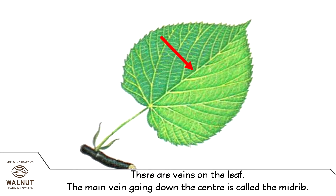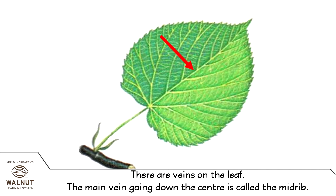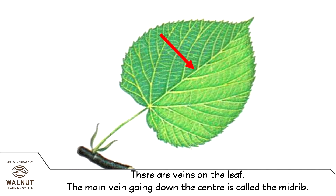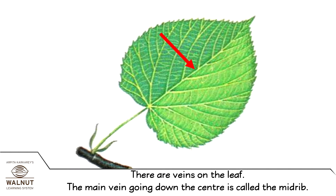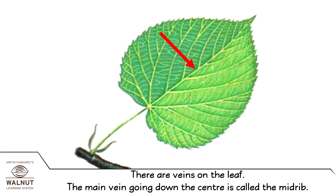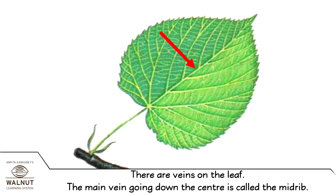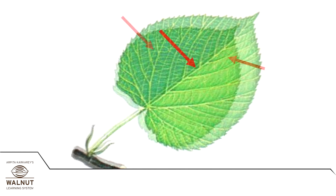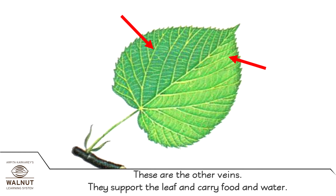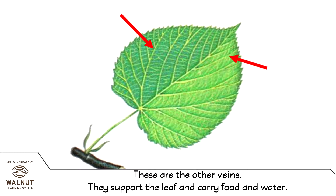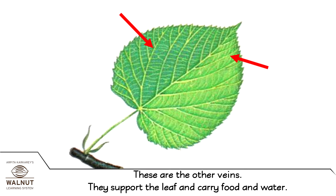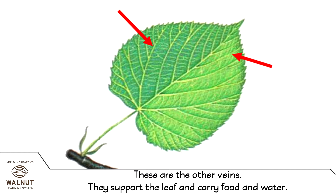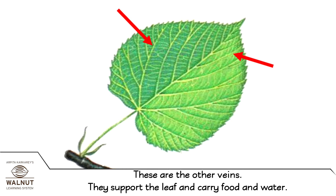There are veins on the leaf. The main vein going down the center is called the midrib. The other veins support the leaf and carry food and water.